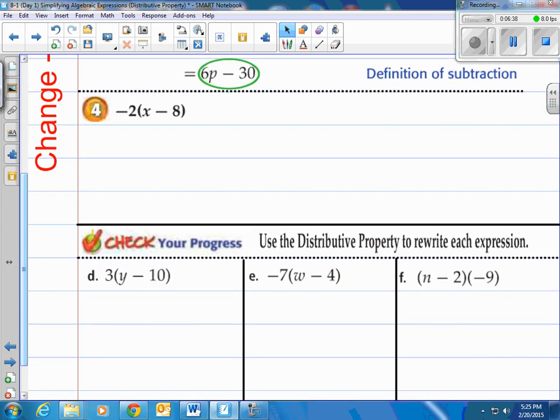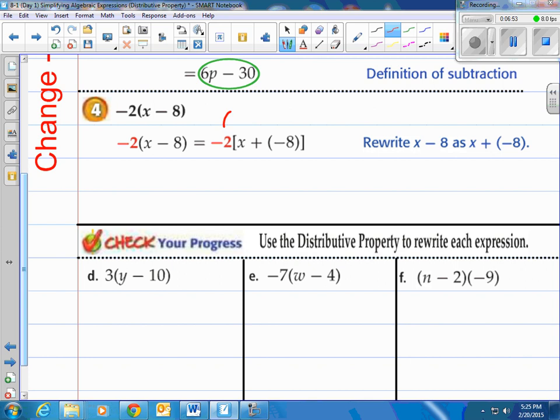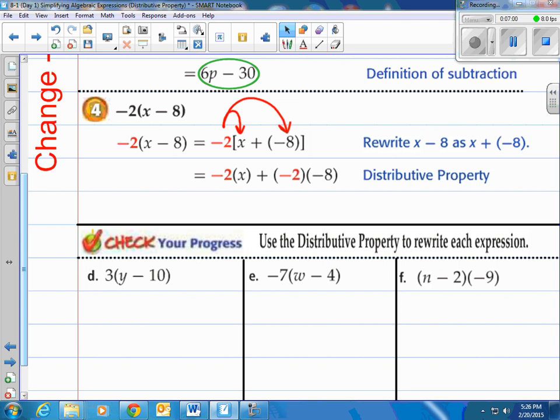How about this fourth example here? Negative 2 times the quantity of x minus 8. Again, subtraction. We're going to change it to addition. We already learned how to do that. So let's do adding negative 8 instead of minusing 8. And then we're going to distribute the negative 2 to the x and negative 2 to the negative 8. When we do that, we end up with negative 2 times x and negative 2 times negative 8. And therefore, that equals negative 2x plus—if you remember, two negatives when multiplied equal a positive—that's why it's a positive 16.